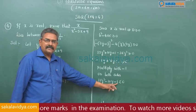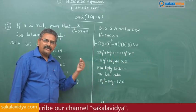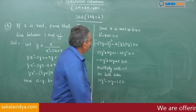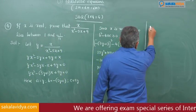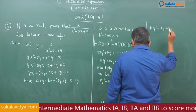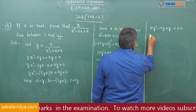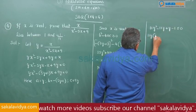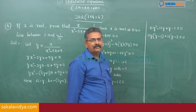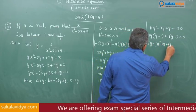For splitting the middle term: 11 × (-1) = -11, and we need numbers whose product is -11 and sum is -10, which are -11 and 1. So we write 11y² - 11y + y - 1 ≤ 0. Taking 11y common: 11y(y - 1) + 1(y - 1) ≤ 0, giving (y - 1)(11y + 1) ≤ 0.